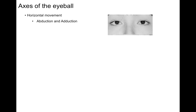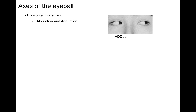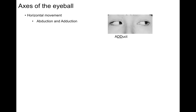First, horizontal movement — meaning the eyes can move back and forth along the horizon in abduction and adduction rotation. Focus on the right eye. The right eye is abducted, then adducted. Abducted means away from the midline or the nose; adducted means the eye is now towards the nose.